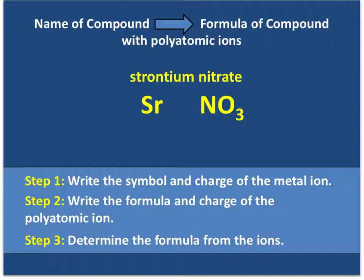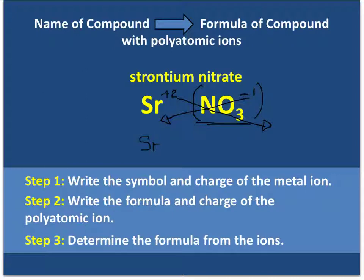Let's look at polyatomic ions now. Strontium is plus 2, nitrate is negative 1. You have to be careful — the polyatomic ion comes as a group, so we put it in parentheses. We crisscross: strontium gets subscript 1, and since we need two of the polyatomic ions, we put NO3 in parentheses with a subscript of 2. The formula is Sr(NO3)2. First step: write the symbol and charge of the metal. Second: write the formula and charge of the polyatomic ion. Then determine the formula using the crisscross method — move the numbers, not the sign.